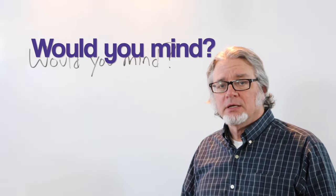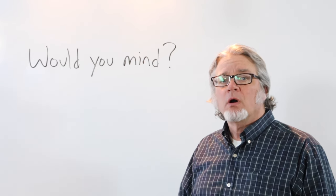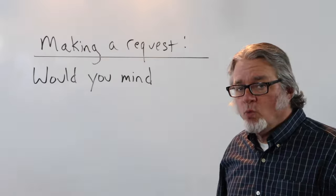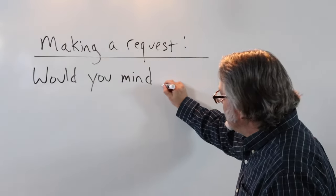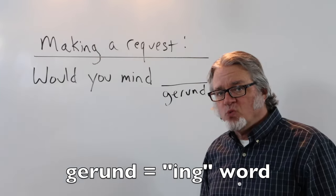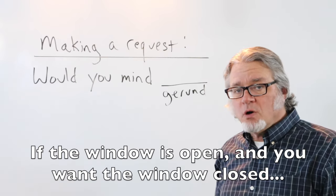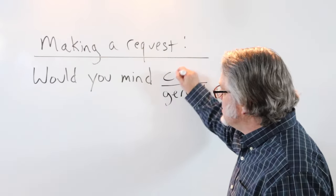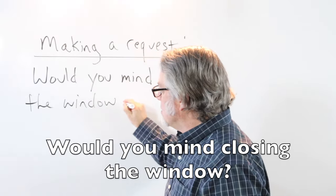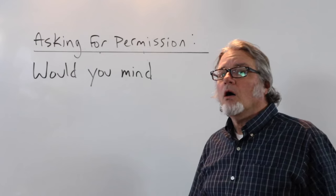You can use 'would you mind' when asking for a favor, making a request, or asking for permission. To make a request, start with 'would you mind' and then use a gerund — an ing word. So if the window is open and you want it closed, you would say 'would you mind closing the window?' You're asking another person to close the window.